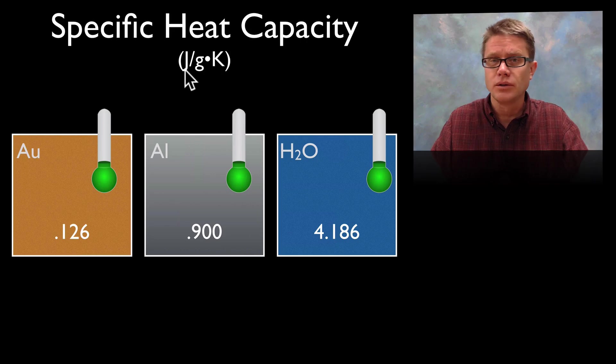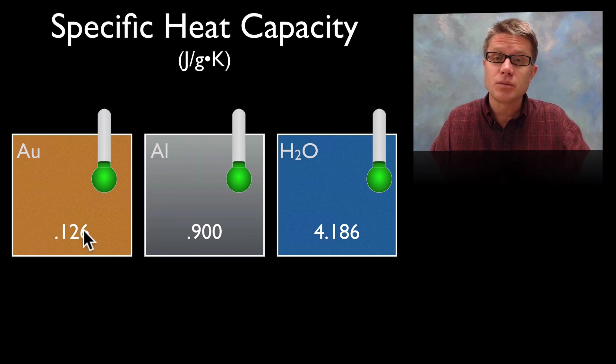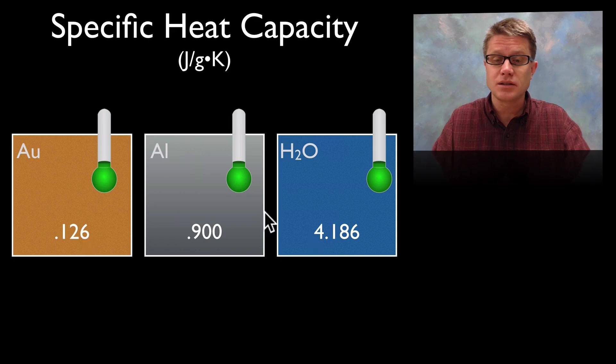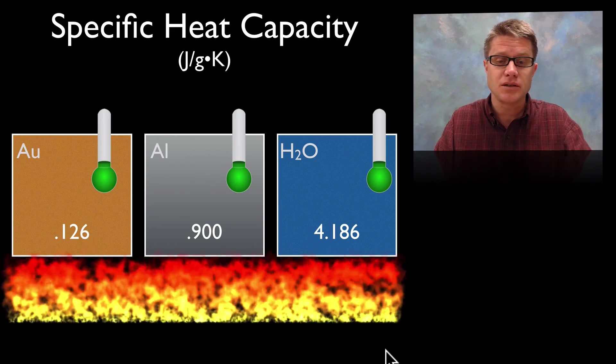If we look at the units that's joules, which is a way that we measure energy, per gram and then Kelvin or degree Kelvin. And so if you have something that has low specific heat capacity that means the amount of energy it has is going to change more readily than something that has a higher specific heat capacity.